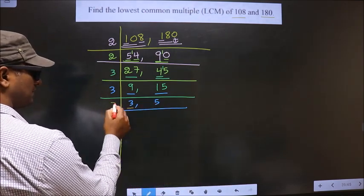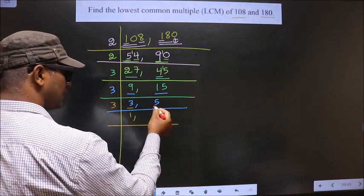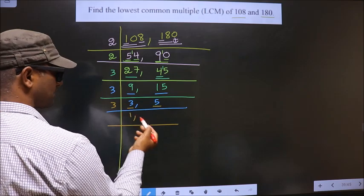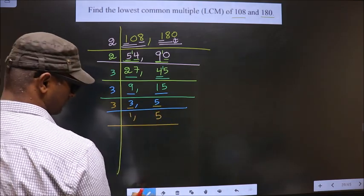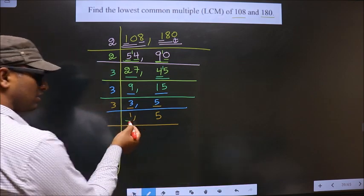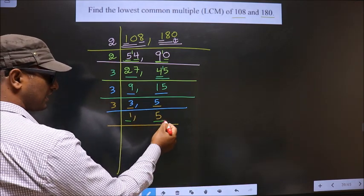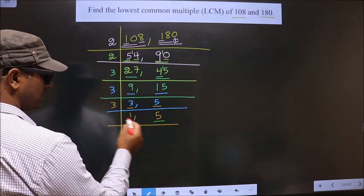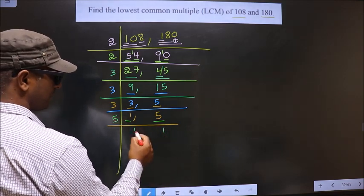Now here we have 3. 3 is a prime number, so we take 3 once — 3 times 1 is 3. The other number is 5. 5 is not divisible by 3, so we write it down as it is. Now we got 1 here, so we focus on the other number, that is 5. 5 is a prime number, so we take 5 once — 5 times 1 is 5.